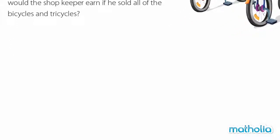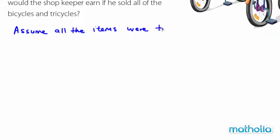We assume all the items were tricycles. Tricycles have 3 wheels, so I have 37 multiplied by 3, which gives you 111.